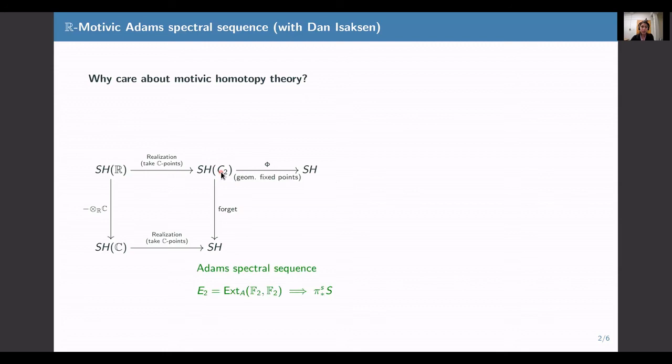For example, one of the main tools for computing homotopy groups of spheres is the Adams spectral sequence. This says that you first start with an algebraic object, this E2 term, that can be computed algorithmically in a range of dimensions, and then you take a series of subquotients, which are usually quite hard to determine, to get to the homotopy groups of spheres.